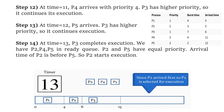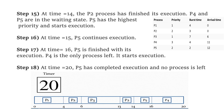P2 and P5 have equal priority, so since the arrival time of P2 is before P5, P2 starts execution. This is given in the diagram, which we can call the Gantt chart.